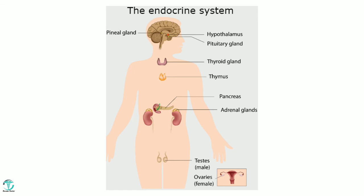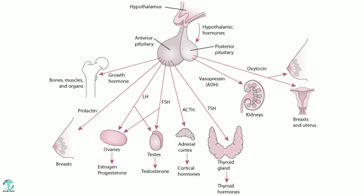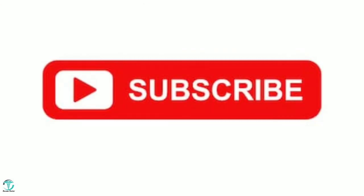Quick revision: endocrine glands are ductless glands that secrete their substances directly into the blood. The ten glands discussed are hypothalamus, anterior pituitary, posterior pituitary, thyroid, adrenal cortex, adrenal medulla, pancreas, parathyroid, testes, and ovaries. If you liked the video, please subscribe, put a thumbs up, and comment below with any doubts. Thank you — see you soon with a new topic.